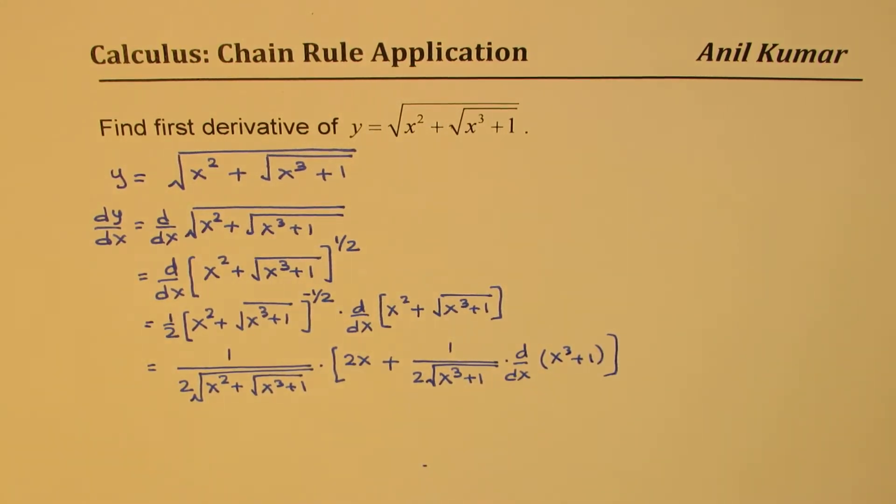So that is how we actually move inside the square root and then keep on finding their derivatives. And ultimately I think we can now write down our result.